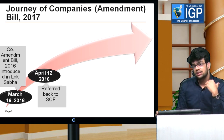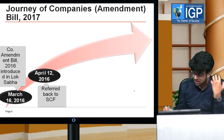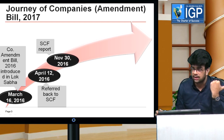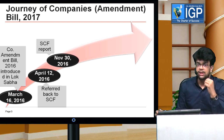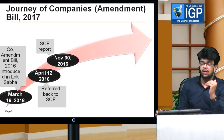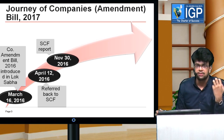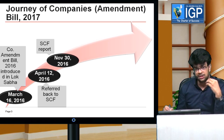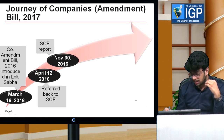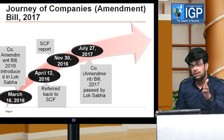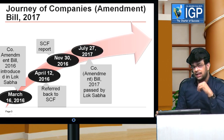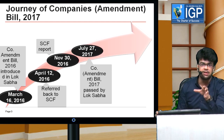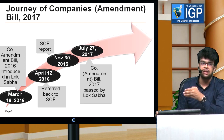The Standing Committee for Finance gave its report on November 30, 2016. On that report, there were further changes made to the bill, and the new Companies Amendment Bill 2017 was passed in Lok Sabha on July 27, 2017.